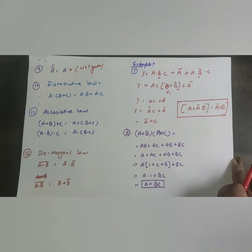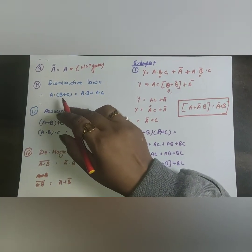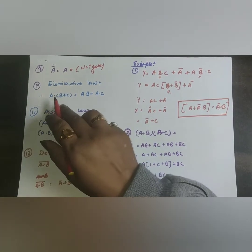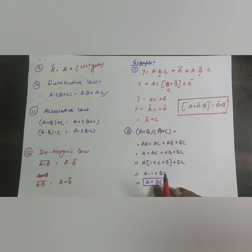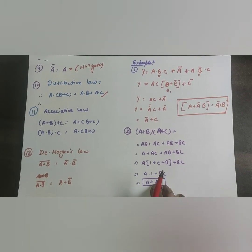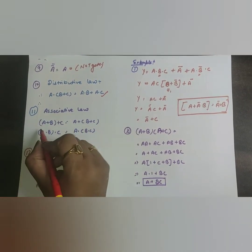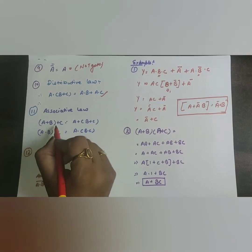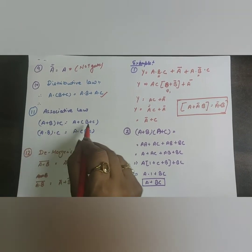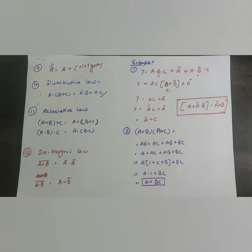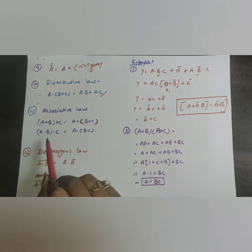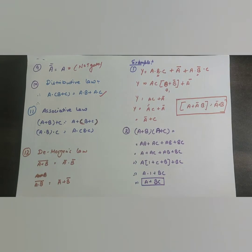The distributive law states: A·(B+C) = A·B + A·C. The associative law states: A+B+C = A+C+B, meaning we can change the position of variables. Also, A·B·C = A·(B·C).